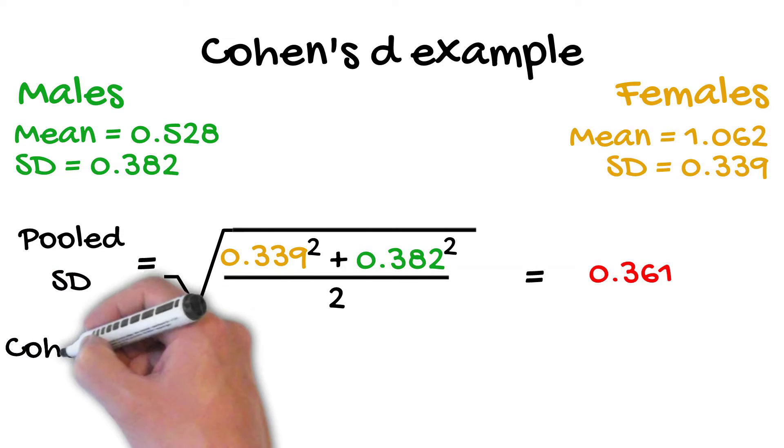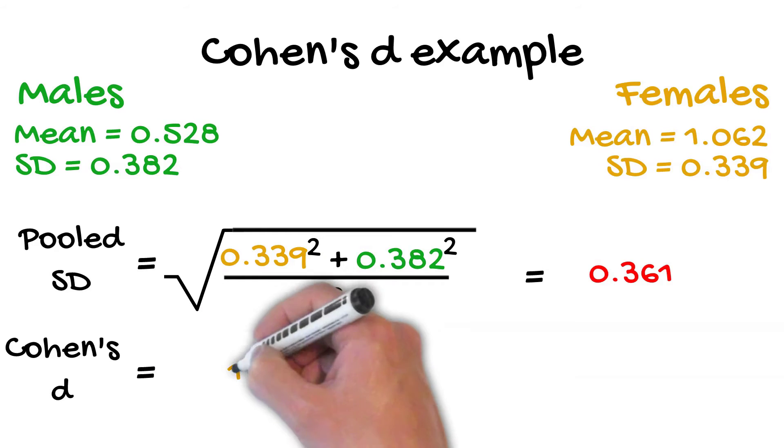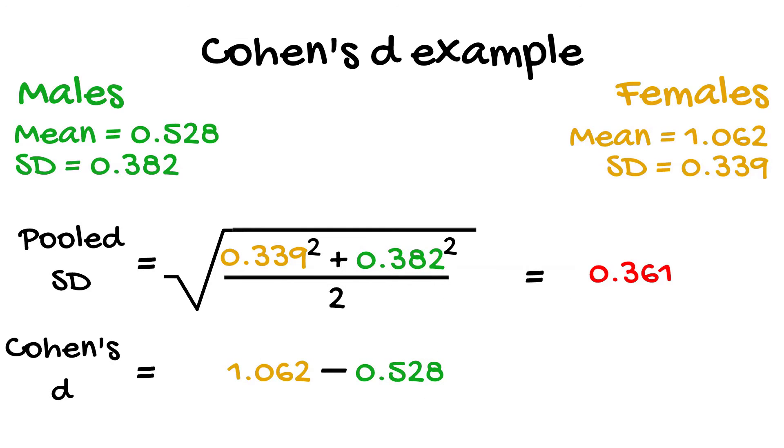We can now put this pooled standard deviation value into the overall Cohen's D equation along with the two group means. So, Cohen's D equals 1.062 minus 0.528 divided by 0.361. Plugging all of that into a calculator will give a D value of 1.479. I will discuss how to interpret the Cohen's D values shortly.